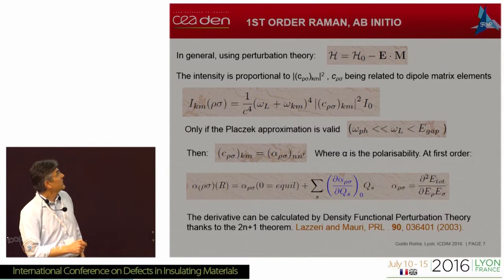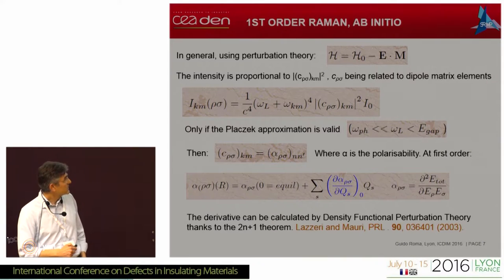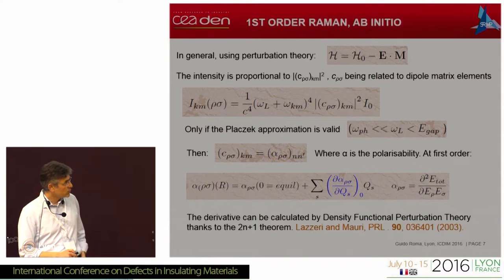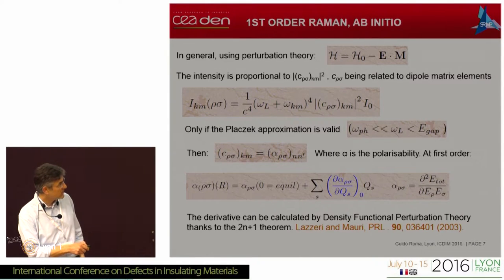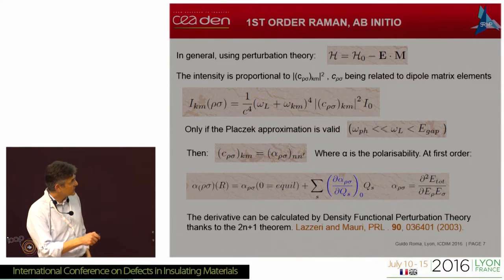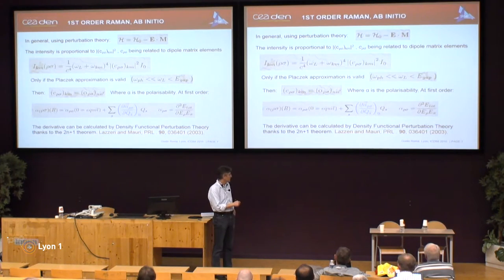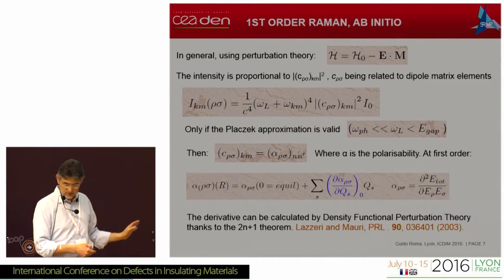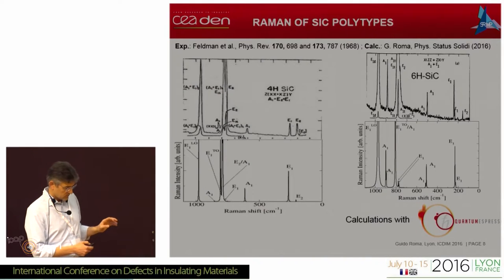The calculation approach is based on perturbation theory. The Raman tensor at first order is related to the derivative of the polarizability, which is a third derivative of energy — the second derivative of the polarizability with respect to fields, plus a derivative with respect to phonon eigenvectors. The Raman tensor can be calculated using the 2n+1 theorem, which states that you can calculate the (2n+1)th derivative of energy knowing only the nth derivative of the electron wave functions. This was shown for Raman spectra by Lazzeri-Mauri in 2003, and we use this framework as implemented in Quantum Espresso.